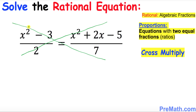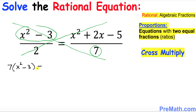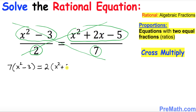Let's multiply x squared minus 3 times 7. I'll write down 7 times (x squared minus 3) equals 2 times (x squared plus 2x minus 5). So we can write 2 times (x squared plus 2x minus 5).